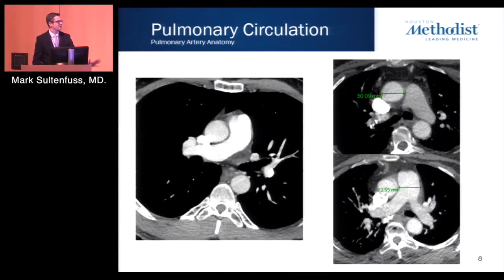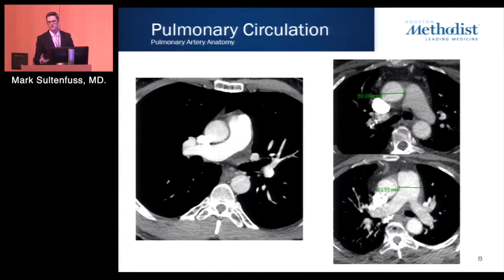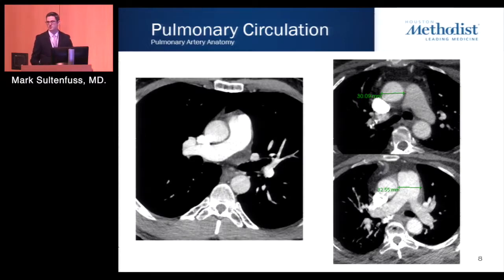Examples of normal and abnormal pulmonary artery to aortic ratios are shown. Additionally, within the parenchyma itself, a pulmonary artery to adjacent bronchus ratio greater than 1 is considered abnormal and also suggestive of pulmonary arterial hypertension.